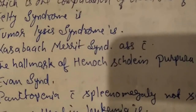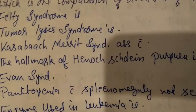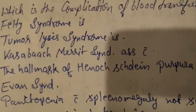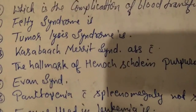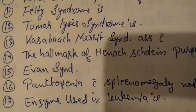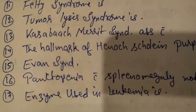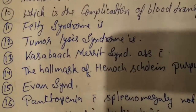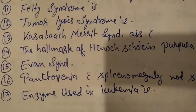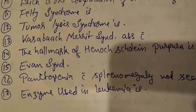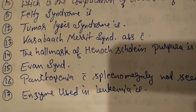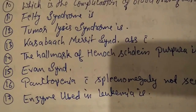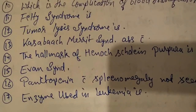Fourteenth question: the hallmark of Henoch-Schönlein purpura — this is asked many times — the answer is palpable purpura. Fifteenth question: Evans syndrome includes anemia and thrombocytopenia.